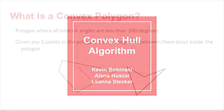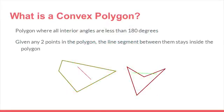Let's talk about the convex hull algorithm. To talk about convex hulls, we first have to define a convex polygon. You might remember from high school that a convex polygon is a polygon with all interior angles less than 180 degrees. This definition is equivalent to the following: given any two points in the polygon, the line segment between them stays inside that polygon.